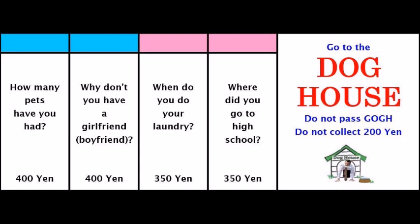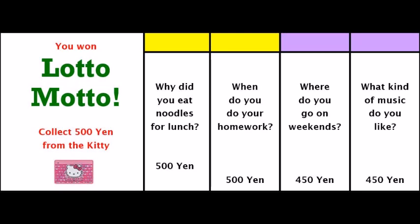Where did you go to high school? When do you do your laundry? Why don't you have a boyfriend? How many pets have you had? What kind of music do you like? Where do you go on weekends? When do you do your homework? Why did you eat noodles for lunch? Collect 500 N from the kitty.